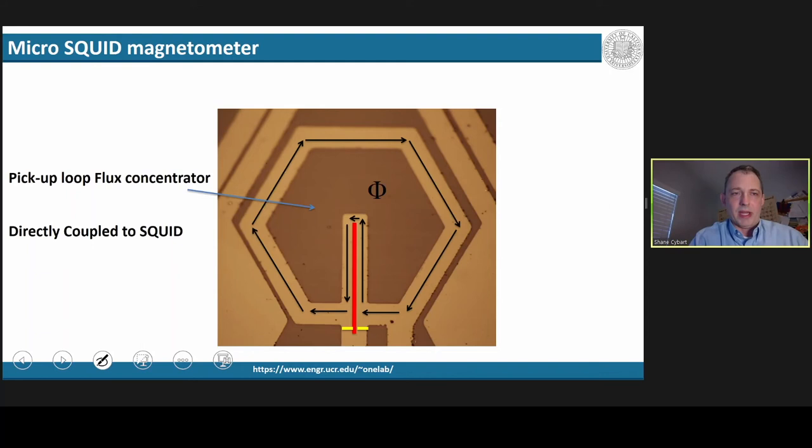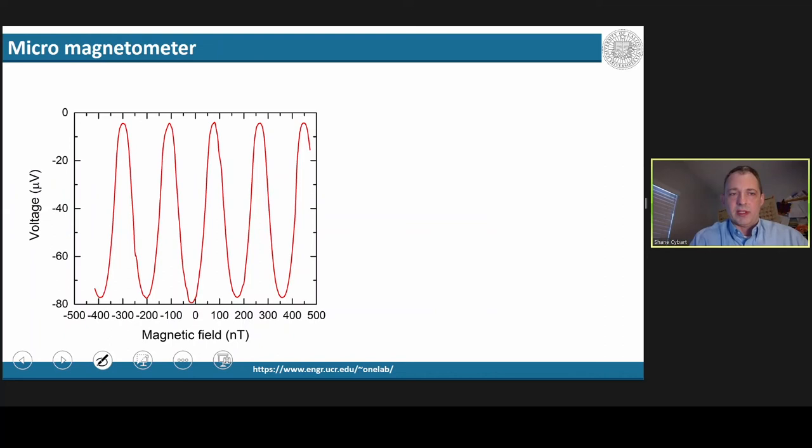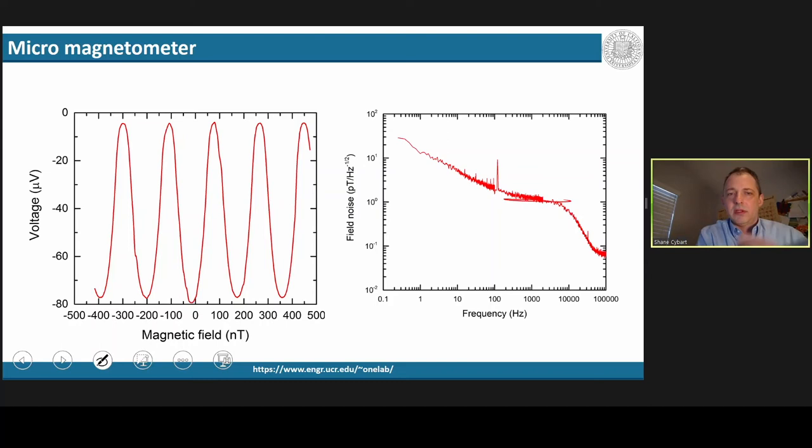And because we can control that resistance, we see very large 80 microvolt voltages out of these devices for very narrow 100 nanotesla magnetic field. The noise properties of this device have a floor at about one picotesla, which is an excellent number for a device that's only 100 microns.